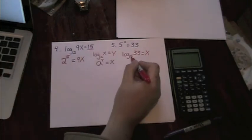To check our work, what power of 5 is 33? Well, 5 to the x power comes to 33.